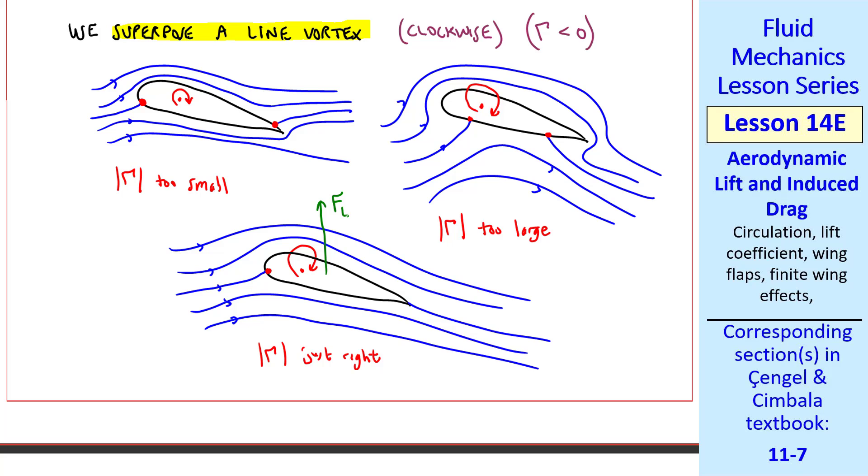This case gives a nice lift force. This condition, in which the flow goes smoothly around the trailing edge, is called the Kutta condition. Why does this give us lift? Since the vortex is spinning clockwise, it adds a higher speed on the top of the airfoil and a lower speed to the right on the bottom of the airfoil. Therefore, there's low pressure at the top and high pressure at the bottom, giving us lift.